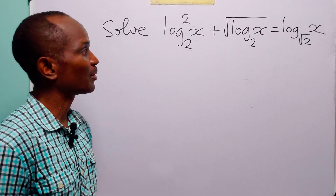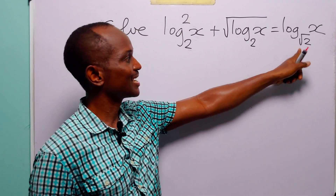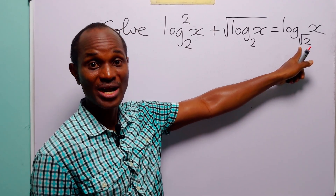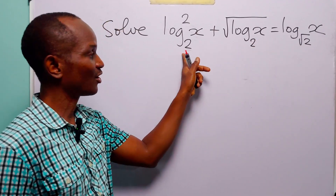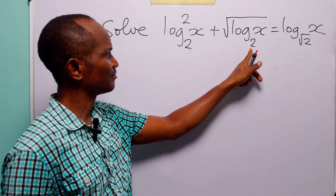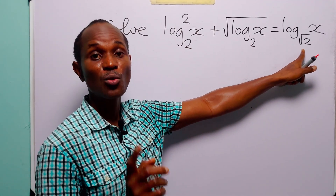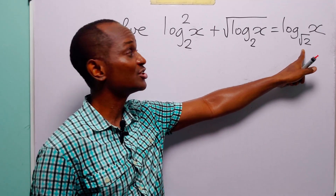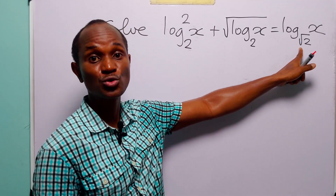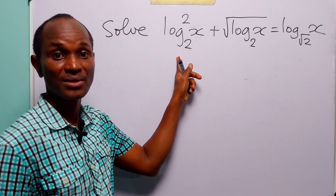To solve this problem, we are going to start from the right-hand side. Notice that this is the only log term that has a different base from the other two. Here we have base 2, base 2, but this is base root 2. So what we are going to do is change the base of this log from root 2 to 2 to match the other two terms.